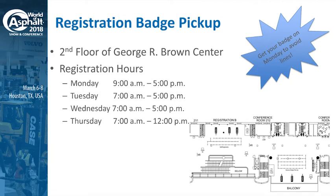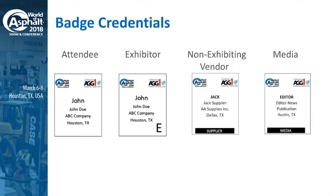If you're familiar with the George R. Brown Center, we are on the second floor, so if you are coming from one of the skywalks or parking areas, this will shoot you out right into the lobby area on the second floor where registration will be. You'll see examples of the badge credentials on screen — the most prominent are the attendee badge and the exhibitor badge. You will have an E at the bottom of your badge indicating exhibitor access for the show floor.